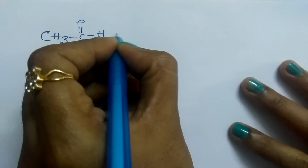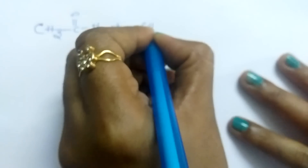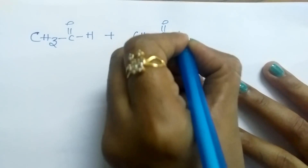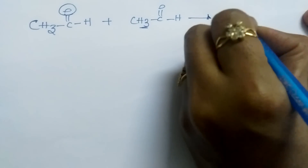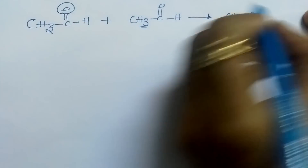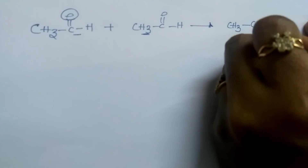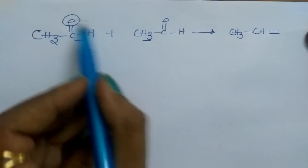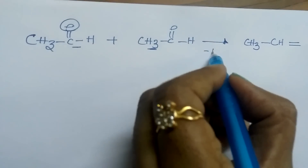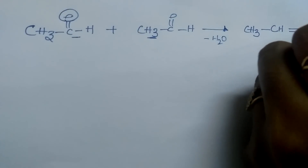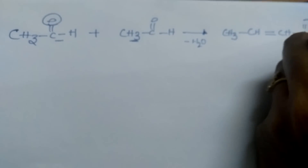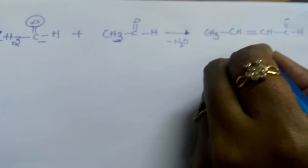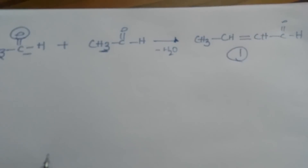When acetaldehyde reacts with another mole of acetaldehyde, remove this oxygen and remove two hydrogens — then you get CH3, then C, with H left over on that carbon. Put a double bond because oxygen and 2 H's go as H2O. One more carbon and one hydrogen remain, giving C double bond O (aldehyde). This is the first product in cross aldol condensation.